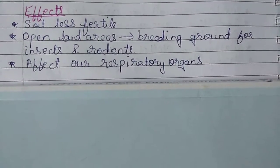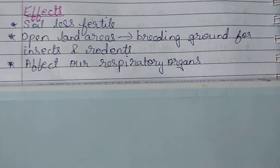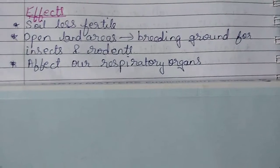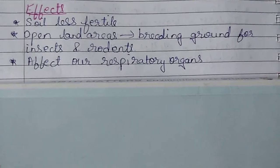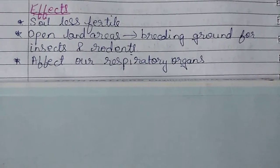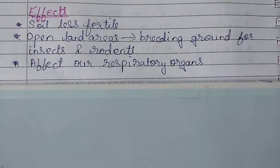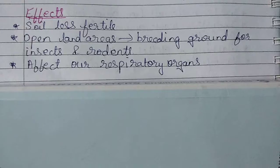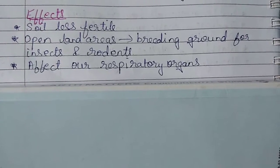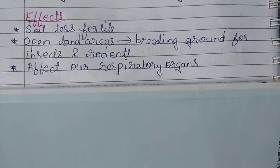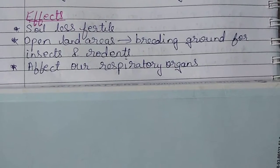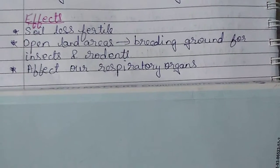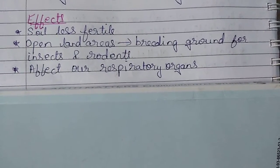Another harmful effect is that harmful chemicals may enter our body and affect our respiratory organs. If fruits and vegetables are grown in soil which is polluted, the harmful chemicals from that soil can enter our body and cause respiratory diseases.